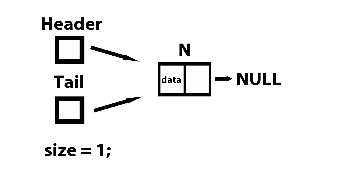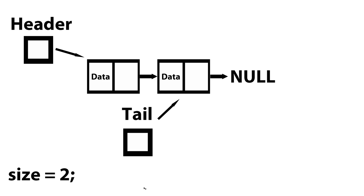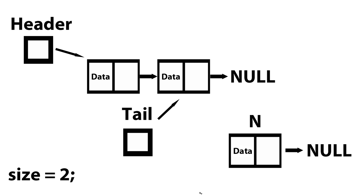Now let's take a look at case two. For case two, we have an example where the linked list is not empty. We have two nodes within our list: our header is pointing to the first node, our tail is pointing to the second node, and our size is equal to two. What I want to do is append a new node to the end of the list. So first, let's create our new node n, and now I want to append it to the back of this list.